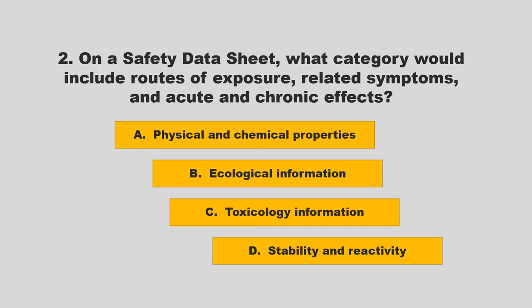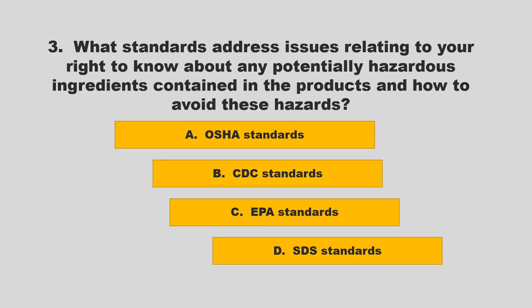On a safety data sheet, what category would include routes of exposure, related symptoms, and acute and chronic effects? The options are: physical and chemical properties, ecological information, toxicology information, or stability and reactivity. The correct answer is C: toxicology information.